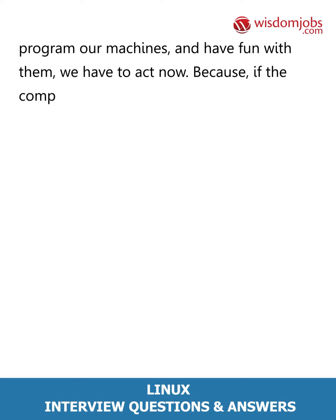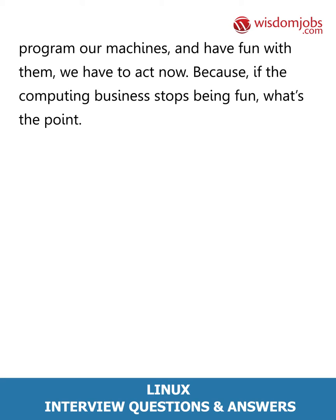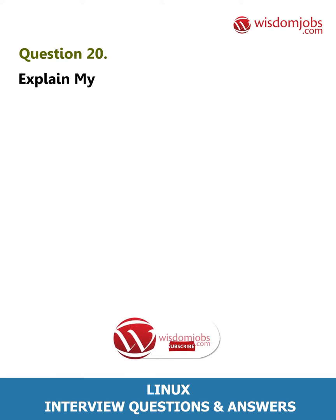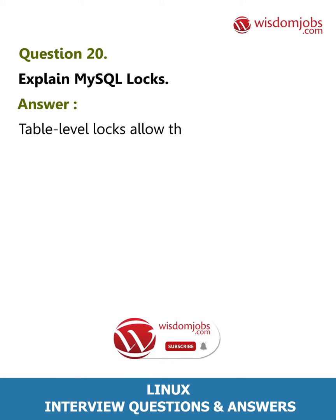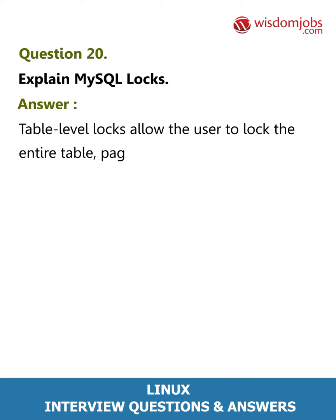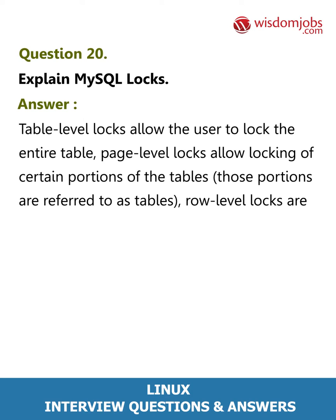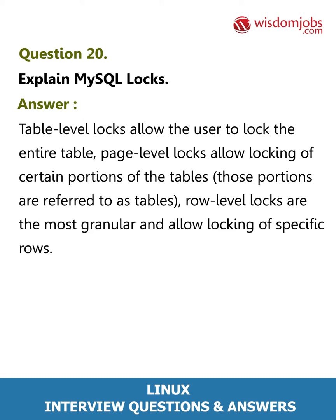Because if the computing business stops being fun, what's the point? Question 20: Explain MySQL locks. Answer: Table-level locks allow the user to lock the entire table. Page-level locks allow locking of certain portions of the table — those portions are referred to as pages. Row-level locks are the most granular and allow locking of specific rows.